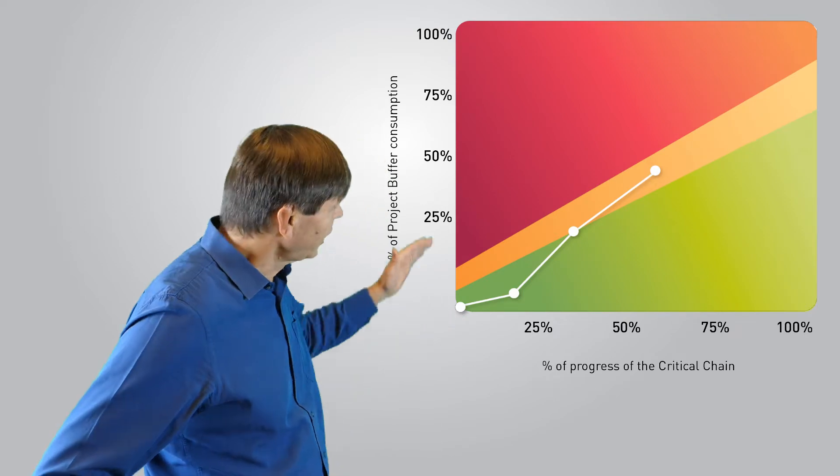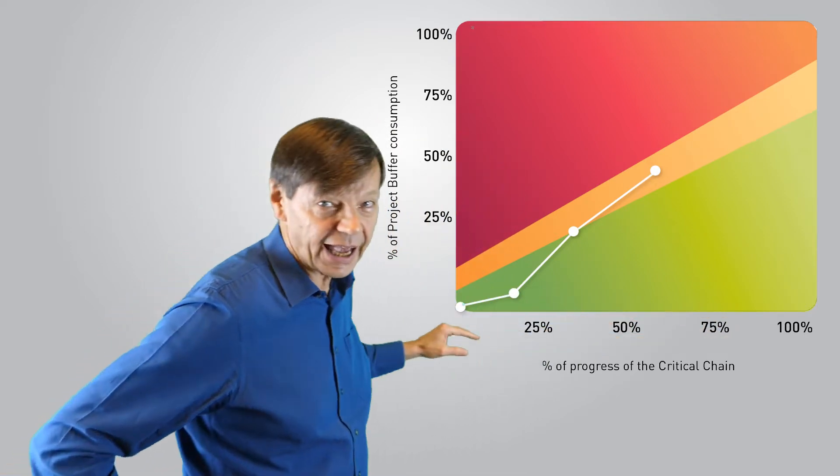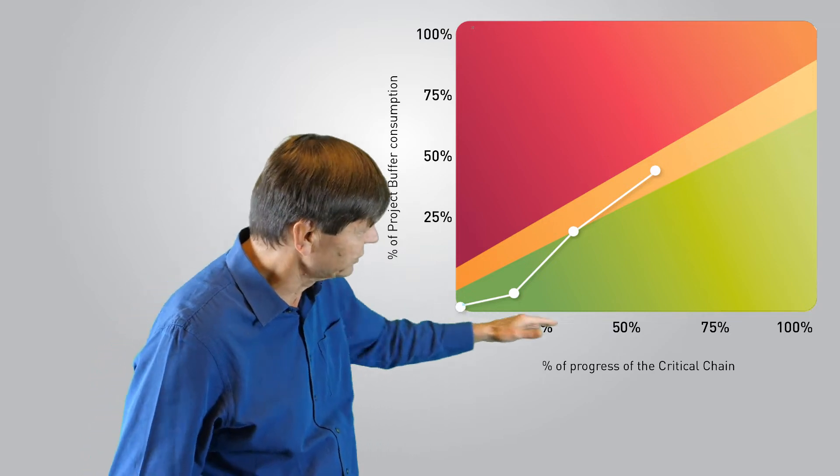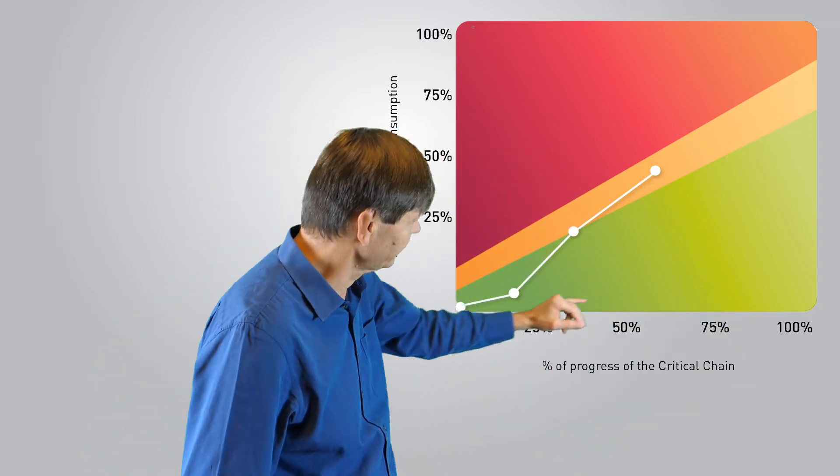You have on a chart two axes. The horizontal axis is in fact the project from the beginning to the end. I start here, I finish there.